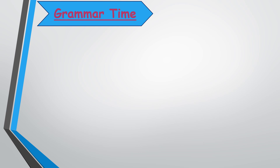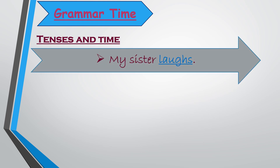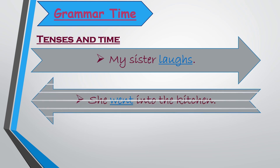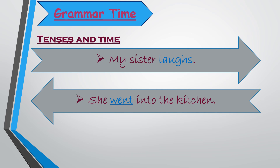Next exercise: grammar time. It is related with tenses and time. We all know that action words are called verbs. Verbs have a tense, and tense means the time of action. Read these sentences. First: my sister laughs — the word 'laughs' is the verb in present tense. Second: she went into the kitchen — the word 'went' is the verb in past tense.